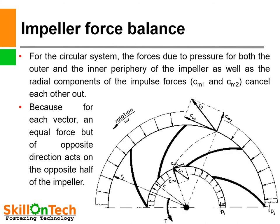Impeller force balance. You can see a picture of the impeller and how forces are balanced. For the circular system, the forces due to the pressure for both the outer and the inner periphery of the impeller, as well as the radial components of the impulse forces CM1 and CM2, cancel each other out — because for each vector an equal force but of opposite direction acts on the opposite half of the impeller. So these forces cancel each other and the impeller force is balanced.